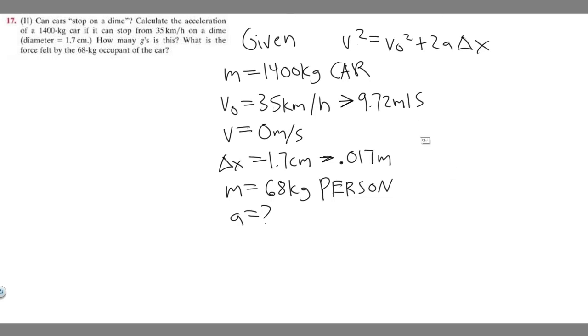If we plug everything in, v is going to be 0. 0 squared is just 0, so 0 equals v₀ squared. Keep in mind you got to use the meters per second one.